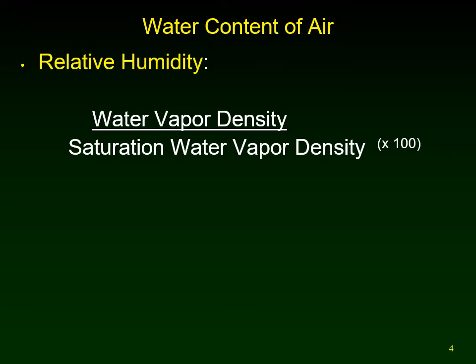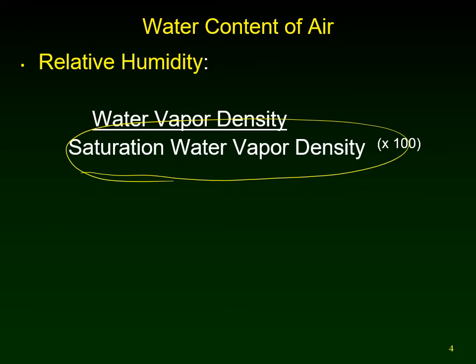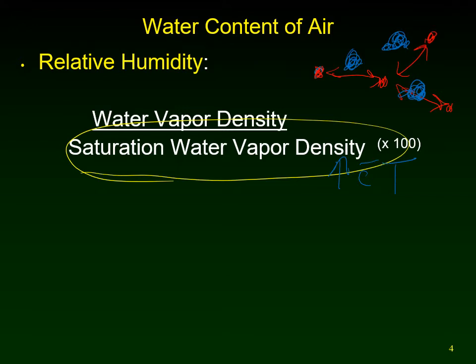The saturation water vapor density actually varies with temperature. If the temperature is higher, the air molecules are moving faster and pushing each other apart, so as temperature increases there's more space between air molecules for water molecules. So the saturation water vapor density increases with temperature. Water vapor density is measured as water vapor per unit volume of air, and saturation water vapor density is the quantity of water vapor the air can potentially hold.